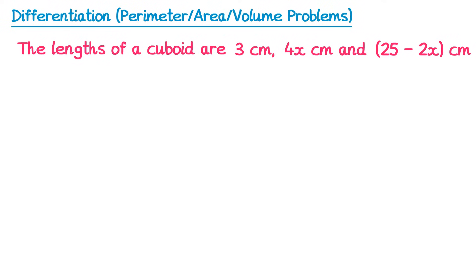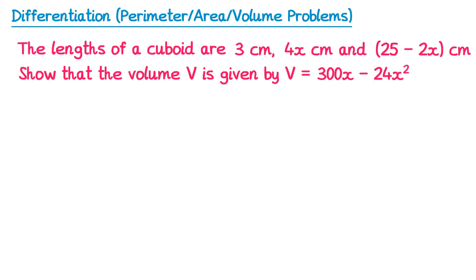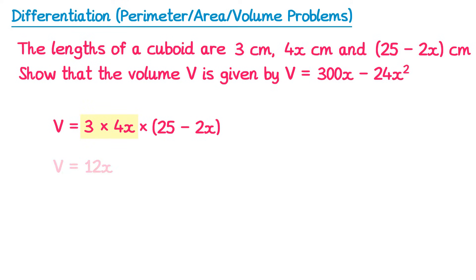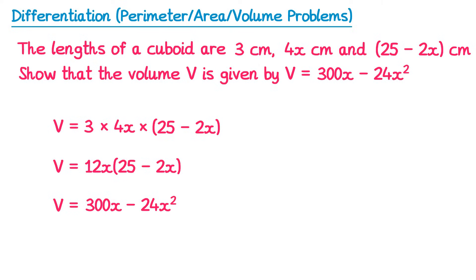Now we'll try a second question. This time we have a cuboid and the lengths are 3, 4x and 25 minus 2x. We need to first of all show the volume is given by V equals 300x minus 24x squared. To calculate the volume of a cuboid you just multiply the lengths together, so V equals 3 times 4x times 25 minus 2x. Simplifying the first two terms: 3 times 4x is 12x. Expanding the bracket: 12x times 25 is 300x and 12x times negative 2x is negative 24x squared. So we've shown that this is correct.